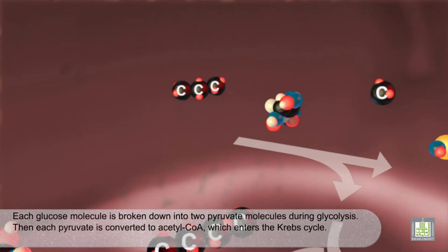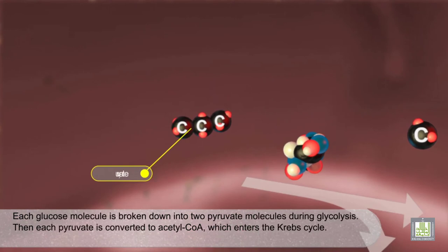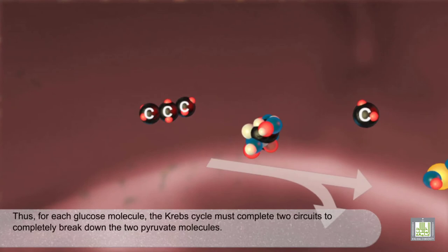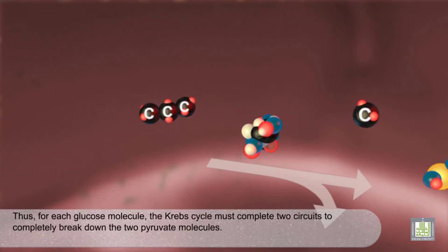Each glucose molecule is broken down into two pyruvate molecules during glycolysis. Then, each pyruvate is converted to acetyl-CoA, which enters the Krebs cycle. Thus, for each glucose molecule, the Krebs cycle must complete two circuits to completely break down the two pyruvate molecules.